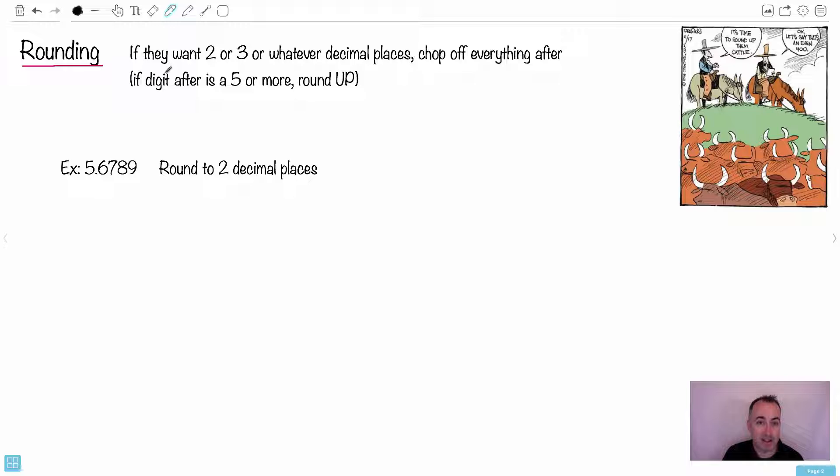Now rounding is an important thing here. I like this one, it's time to round up them cattle. Okay, let's say it's an even 400. He's rounding up. Get it? Rounding up. So here, if we're rounding, if they want two or three or whatever decimal places that they tell you, it's important to sort of chop off everything afterwards.